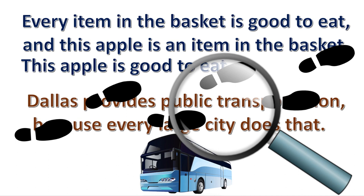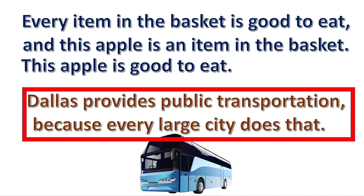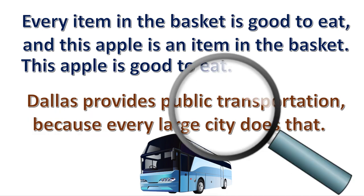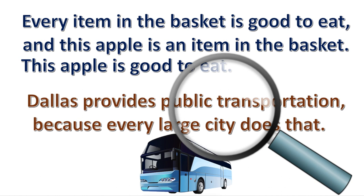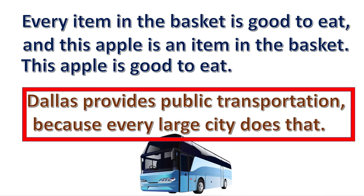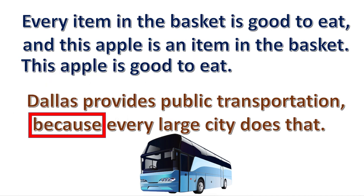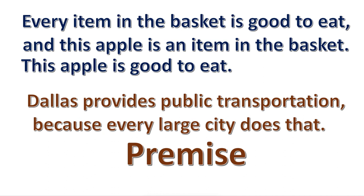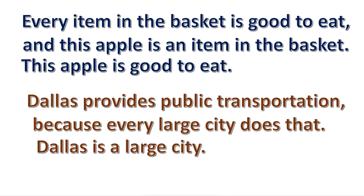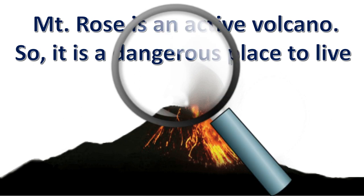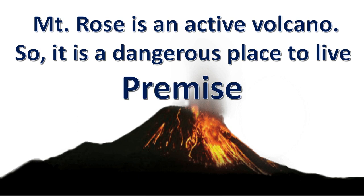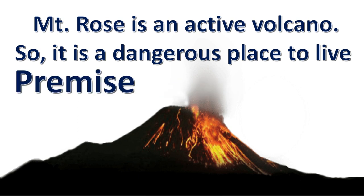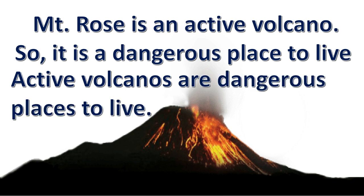The second hint is: if the enthymeme contains a premise indicator word or a conclusion indicator word, the missing statement is probably a premise. Look at this example. Notice the premise indicator word 'because.' The missing statement is a premise. The premise is: Dallas is a large city. Here's another example. Notice the enthymeme contains the conclusion indicator word 'so.' Again, the enthymeme is missing a premise. The missing premise is: active volcanoes are dangerous places to live.